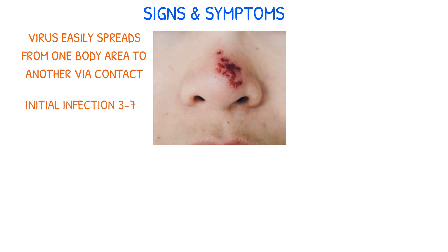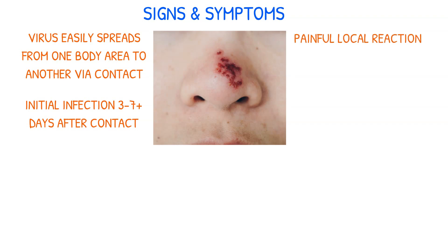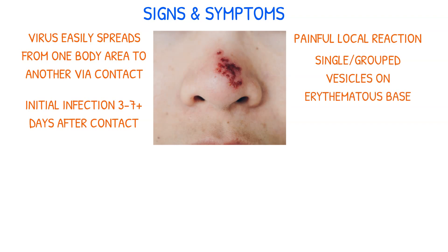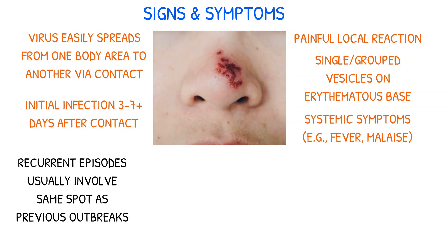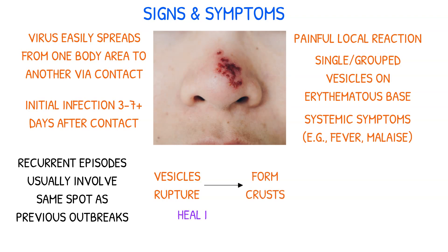The first episode of a herpes infection may occur 3–7 days or more after contact, with symptoms such as painful local reaction, single or grouped vesicles on an erythematous base, and possible systemic symptoms like fever and malaise. Recurrent episodes usually involve the same symptoms and typically occur in the same spot as previous outbreaks. The vesicles eventually rupture, forming a crust, and the lesions usually resolve within 2–6 weeks.